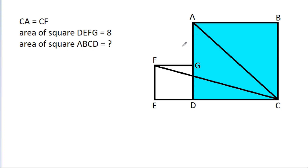In this video, we have given that CA is equal to CF and the area of square DEFG is 8. We have to find the area of square ABCD.